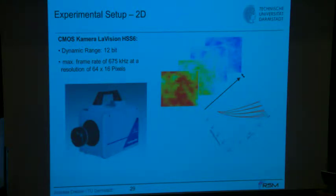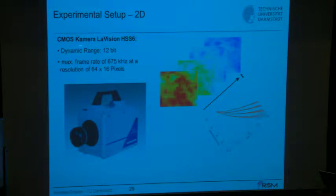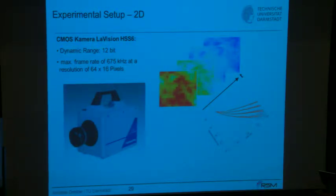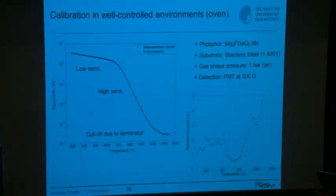CMOS cameras that easily reach megahertz frame rates are now available, though the number of active pixels decreases at higher repetition rates. An instrument from a few years ago had something like 60 by 20 pixels active when operating at 670 kHz. Depending on the phosphor, that is still sufficient for good discretization of the decay.